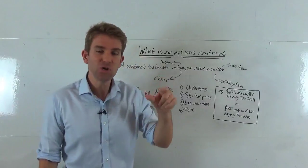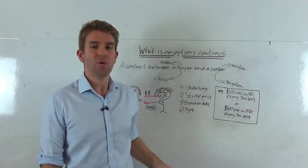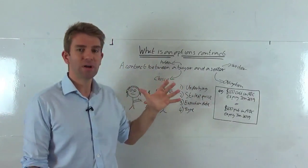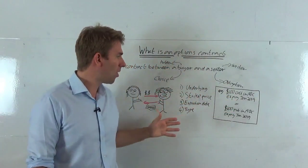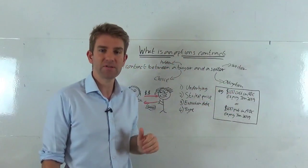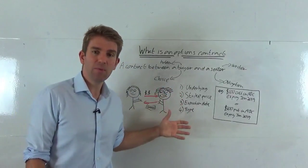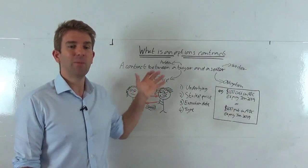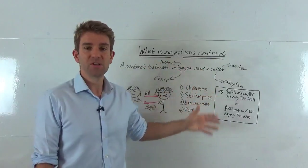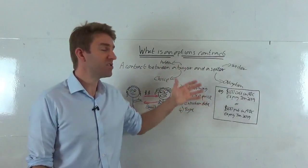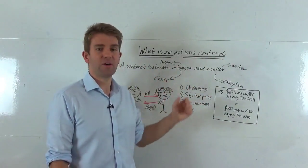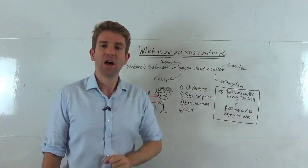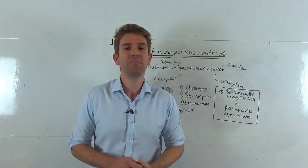Anyway, guys, stay tuned for the next series of videos where we go into a lot more depth on this. We work out exactly what your motivation would be, why you would pick a specific strike price, what the motivation of the seller would be, the motivation of the buyer, how we can trade options to make money, how we can use them as insurance and all that kind of stuff. But anyway, that's a broad outline of what is an options contract. See you next one, guys. Bye bye.